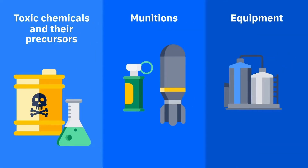By definition, a chemical weapon is one that uses chemicals created to inflict death, harm, or temporary incapacitation to humans.